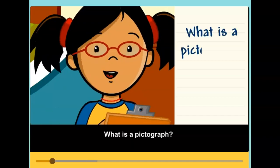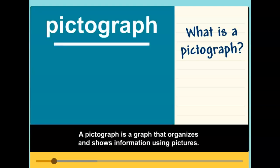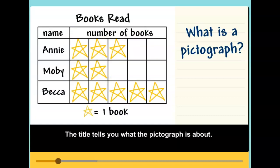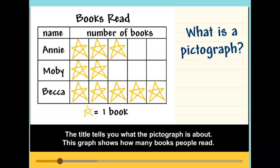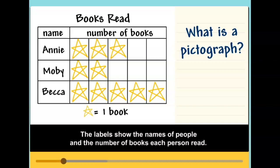What is a pictograph? A pictograph is a graph that organizes and shows information using pictures. The title tells you what the pictograph is about. This graph shows how many books people read. The labels show the names of people and the number of books each person read.